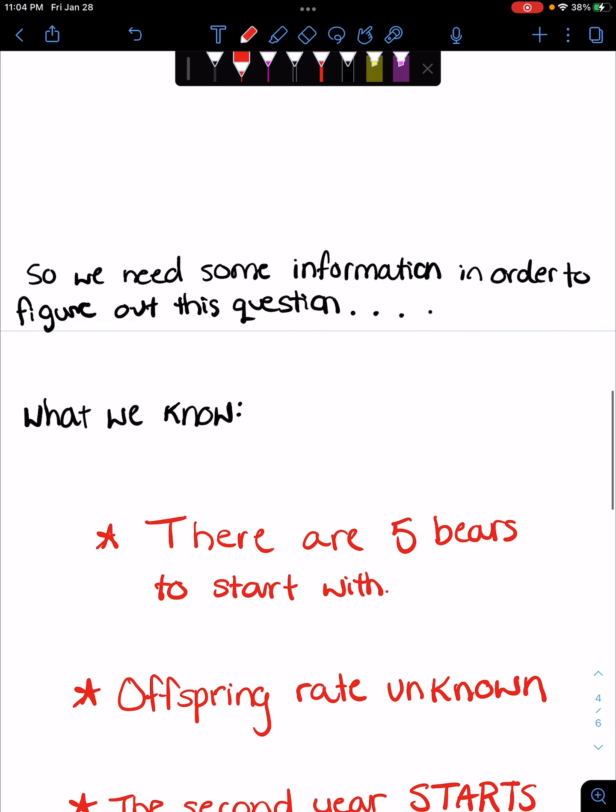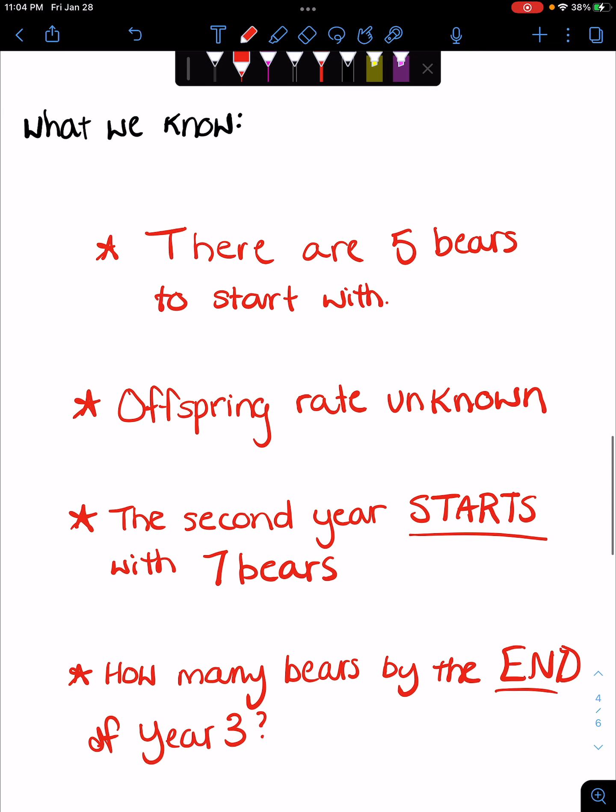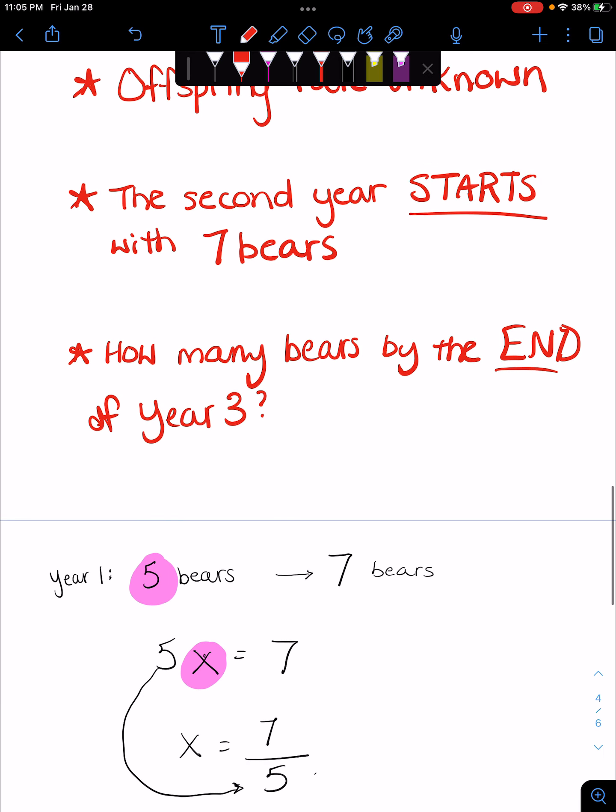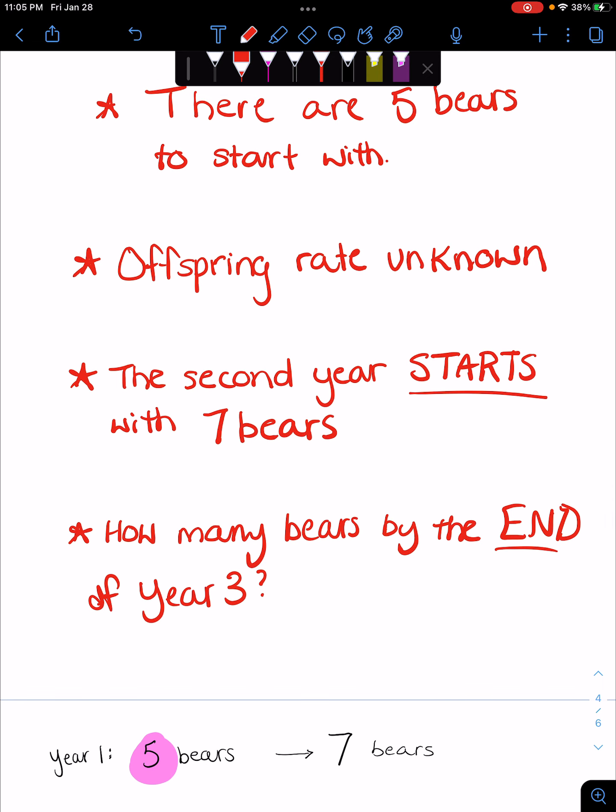We're going to start with five bears. The offspring rate is unknown. The second year starts with seven bears. How many bears by the end of year three? So year one we're going to end up with seven bears. That's given to us. We're going to break this down year by year. Year one we have seven bears, okay?